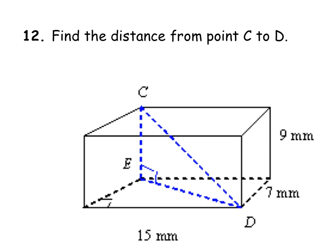Find the distance from point C to point D, which is the diagonal of this rectangular prism.